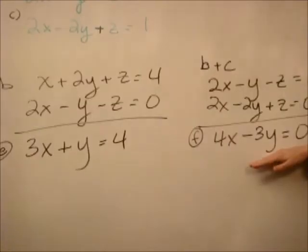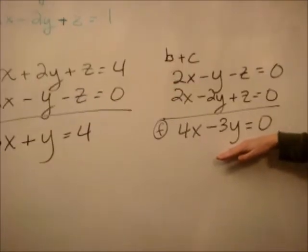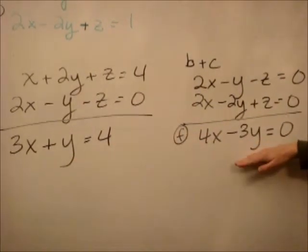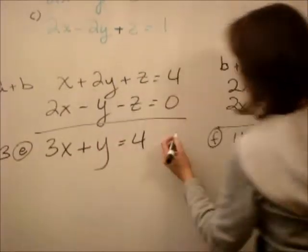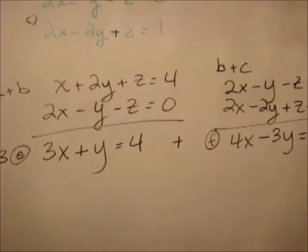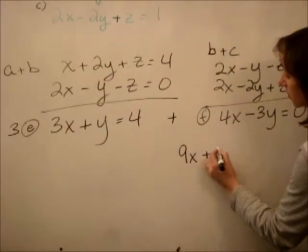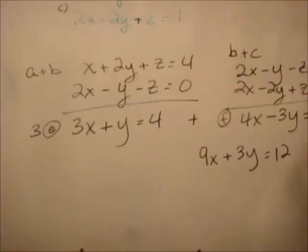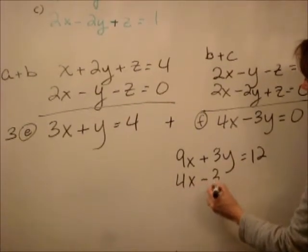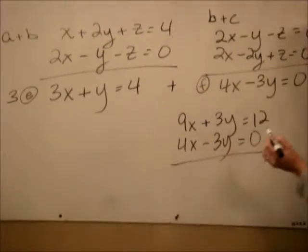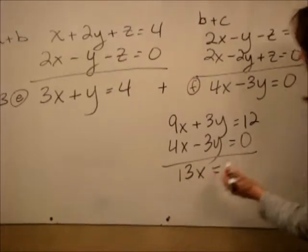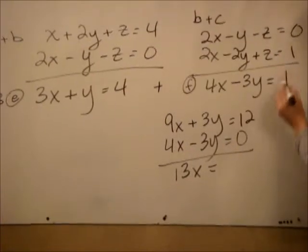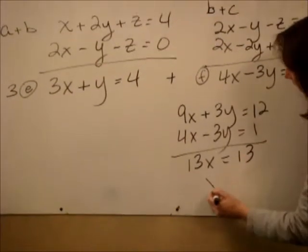We'll call this one f. Now we have two equations with two unknowns, which is exactly what you've done before. We're going to take equation e times 3 and add it to f to eliminate the y's. So we get 9x plus 3y equals 12, and add it to f: 4x minus 3y equals zero. We add them together and get 13x equals 13, so x equals 1.